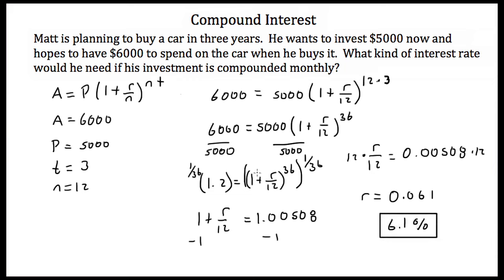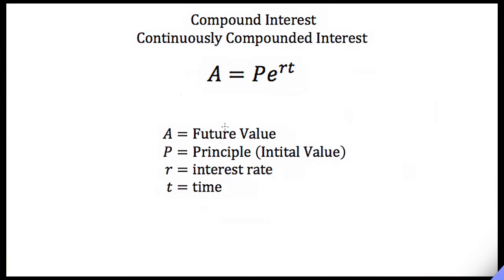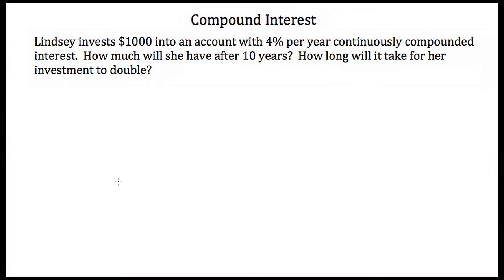Now we need to talk about continuously compounded interest. This is when interest is not compounded daily, monthly, weekly, or yearly — it's always being compounded continuously. The formula looks similar to the compound interest formula, but instead of using (1 plus R over N) as our base, we use the base E. Our formula is A is equal to P times E to the RT. A is our future value, P is our initial investment or principal, R is our interest rate, and T is time.